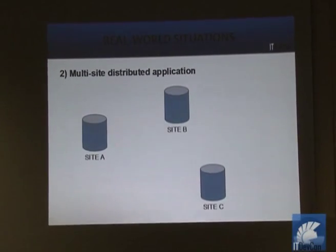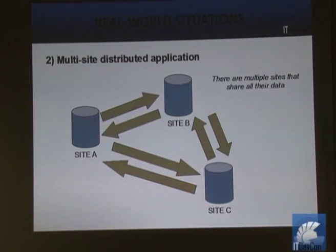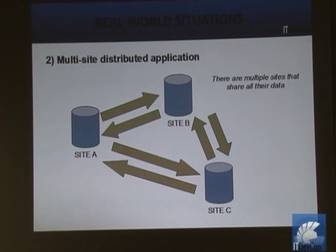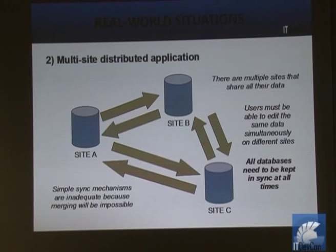The next scenario is multi-site distributed. This is more difficult because you have three sites and there's not necessarily one master — three independent sites that all want to know about everything and share their data. A customer may want to change everything everywhere and update data from site A when visiting site B. In this kind of scenario, forget everything else and focus on triggers and how you're going to implement them, because you need to be able to merge data reliably.